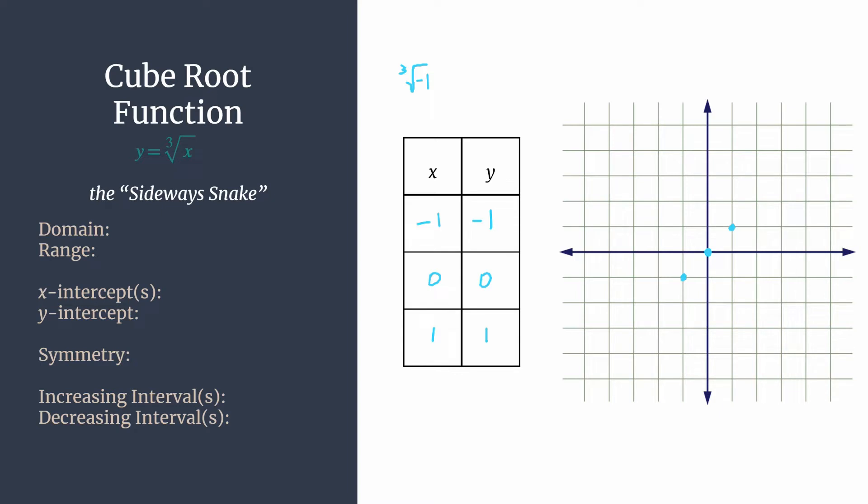So my tip is pick two more x inputs, or even just one more x input so that you can see the shape of this one is supposed to be what we can nickname the sideways snake. Okay, so we want to make sure we pick a perfect cube, you don't need to just pick a random x. So let's pick the next positive perfect cube, which is eight.